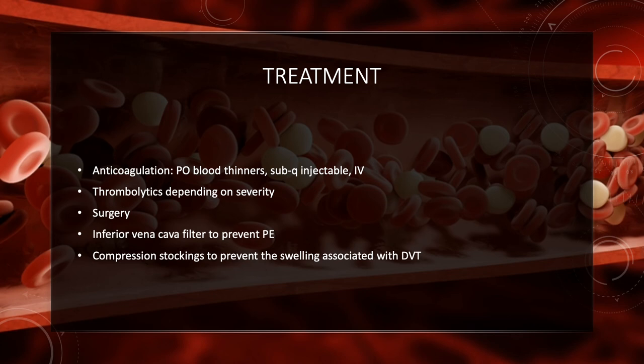Treatment for a DVT includes anticoagulation such as oral blood thinners, sub-Q injections, or IV treatments. Thrombolytics can also be given depending on the severity of the DVT. In extreme cases, a patient may require surgery. In situations where patients cannot receive anticoagulation or thrombolytics, an inferior vena cava filter can be placed to prevent pulmonary embolisms from forming. Compression stockings can also be applied to prevent the swelling associated with DVTs.